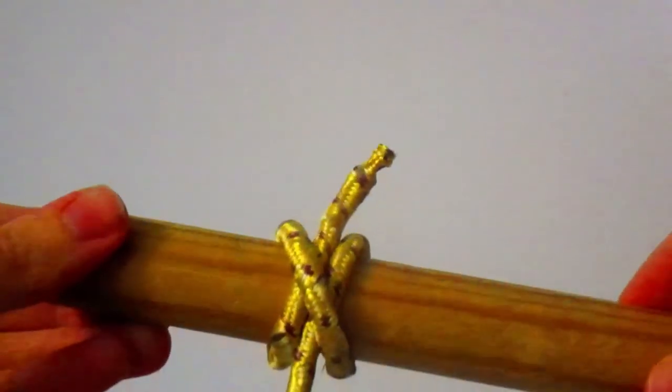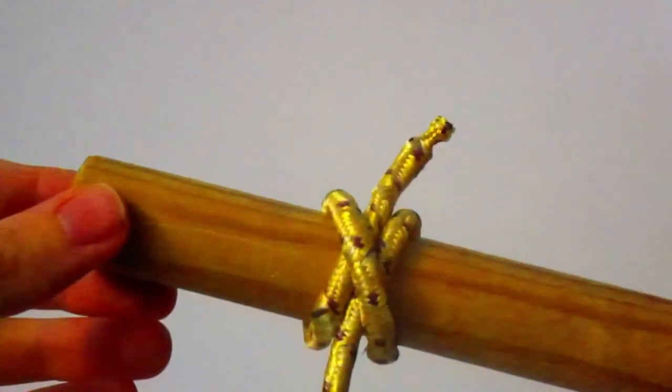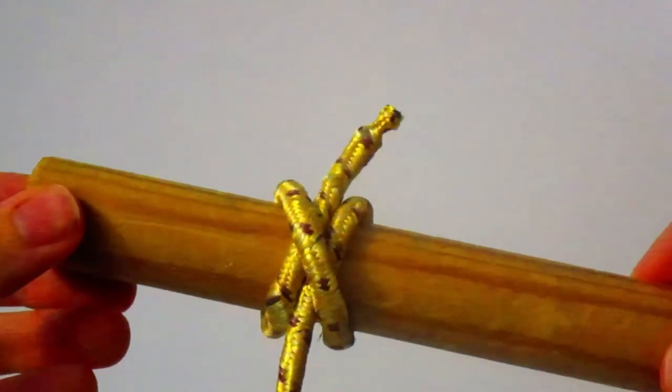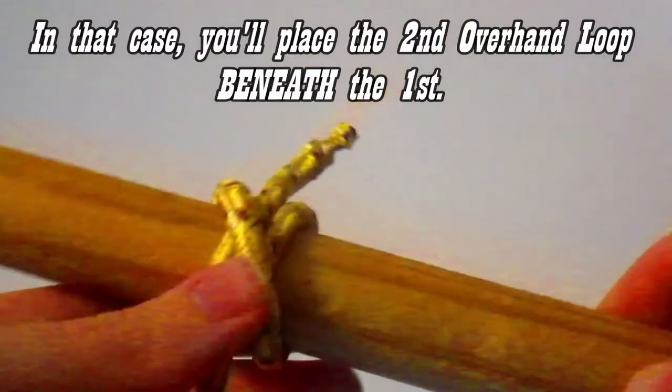You could do the same thing with overhand loops, but instead of putting the second overhand loop above, you put the second overhand loop underneath the first overhand loop and you'll still get a Clove Hitch.